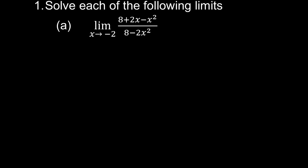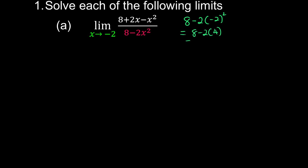Question 1a: what happens to these equations when x approaches negative 2? First of all, we're going to check whether the denominator is going to be 0 or not. We substitute x equals negative 2 into the denominator. At minus 2, 2 squared is 4, and indeed this becomes 0.